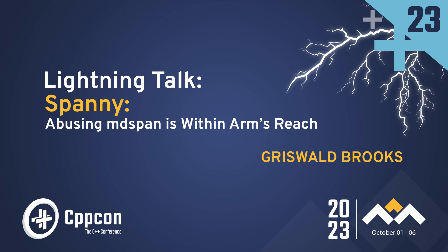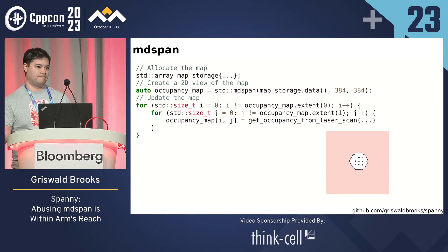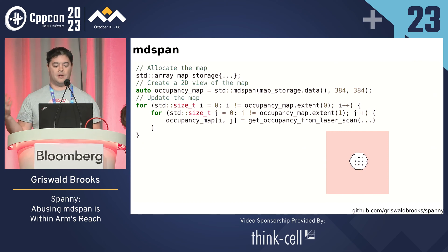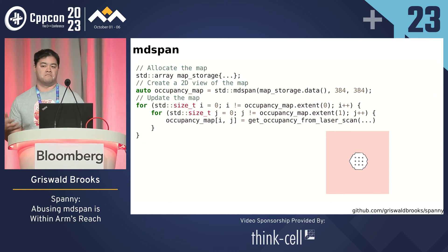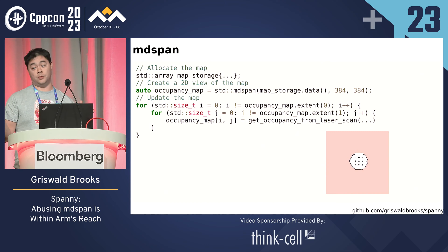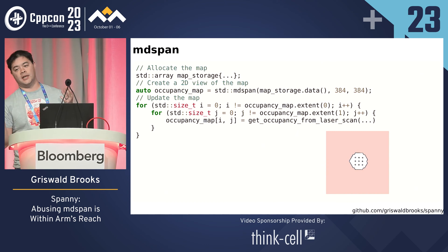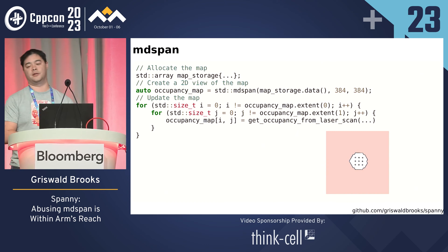C++23 introduced a new library type called mdspan. Typically, the way I used to think of mdspan is as a view into a piece of contiguous data.